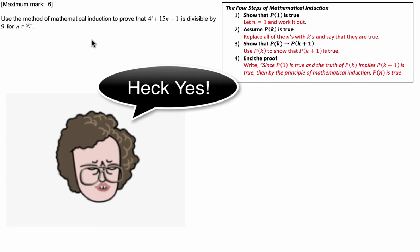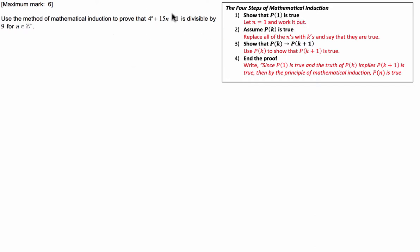The first step is we show that the proposition when we sub in n equals 1 is true. We then assume that the proposition with a value of k is true — this is the assumption required in all mathematical induction proofs. We then show that because P(k) is true, that implies P(k+1) is also true. And then we end the proof.